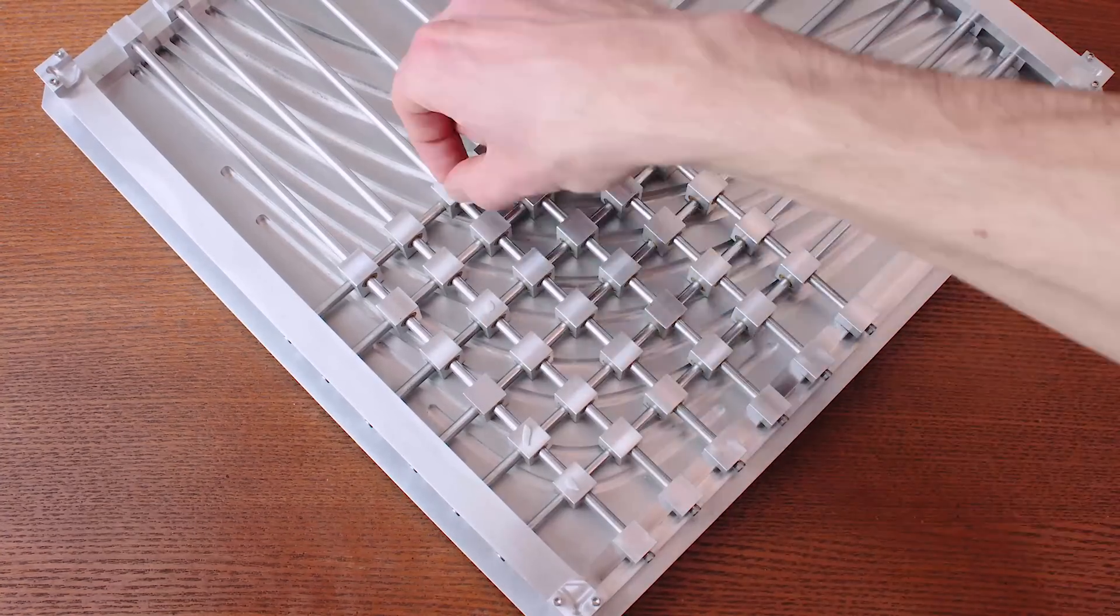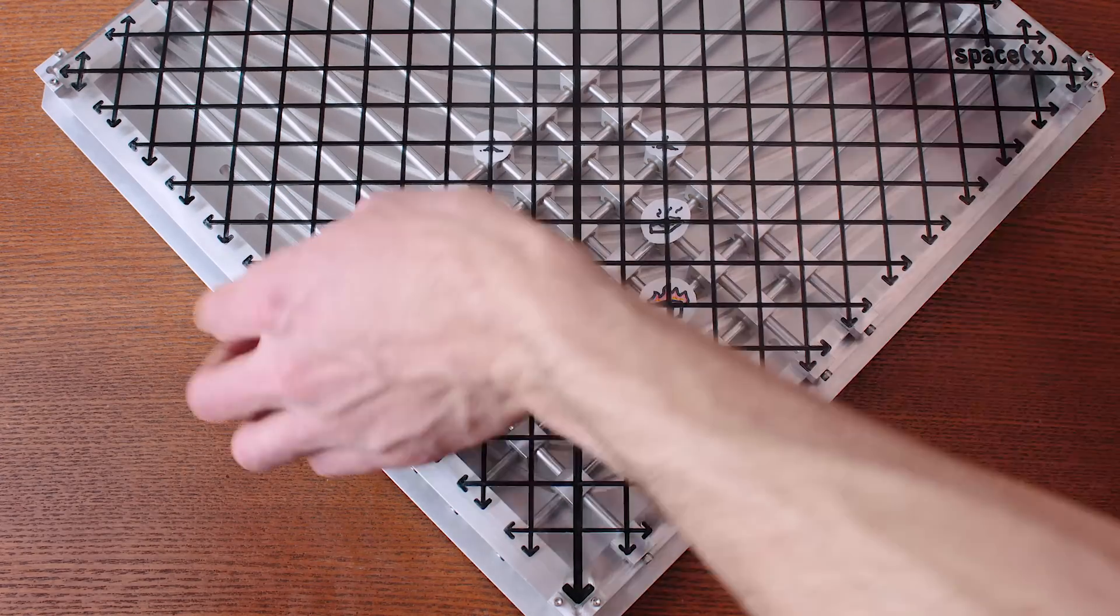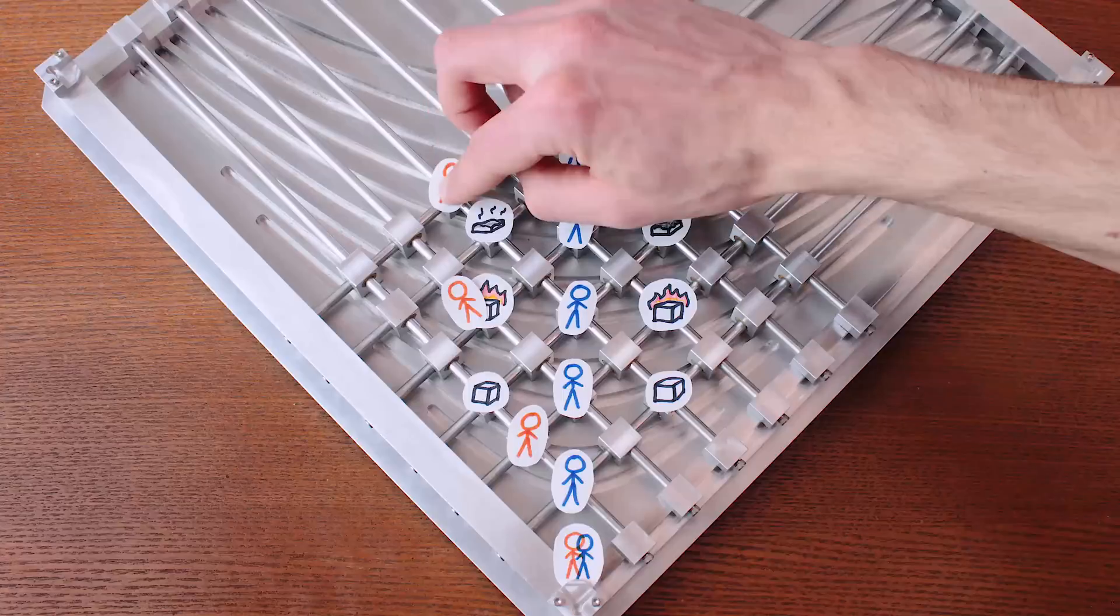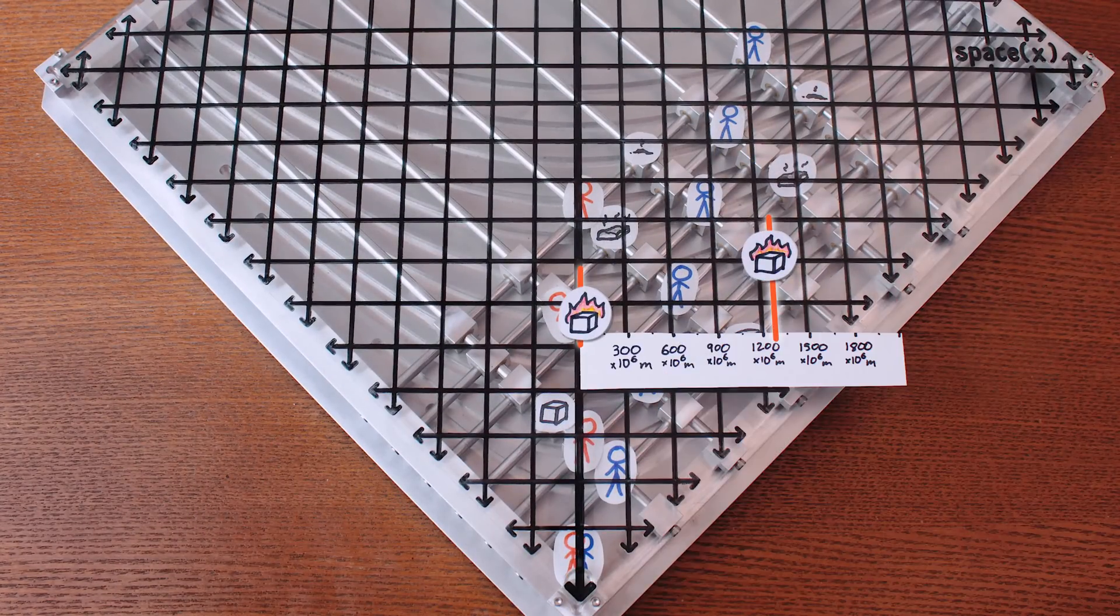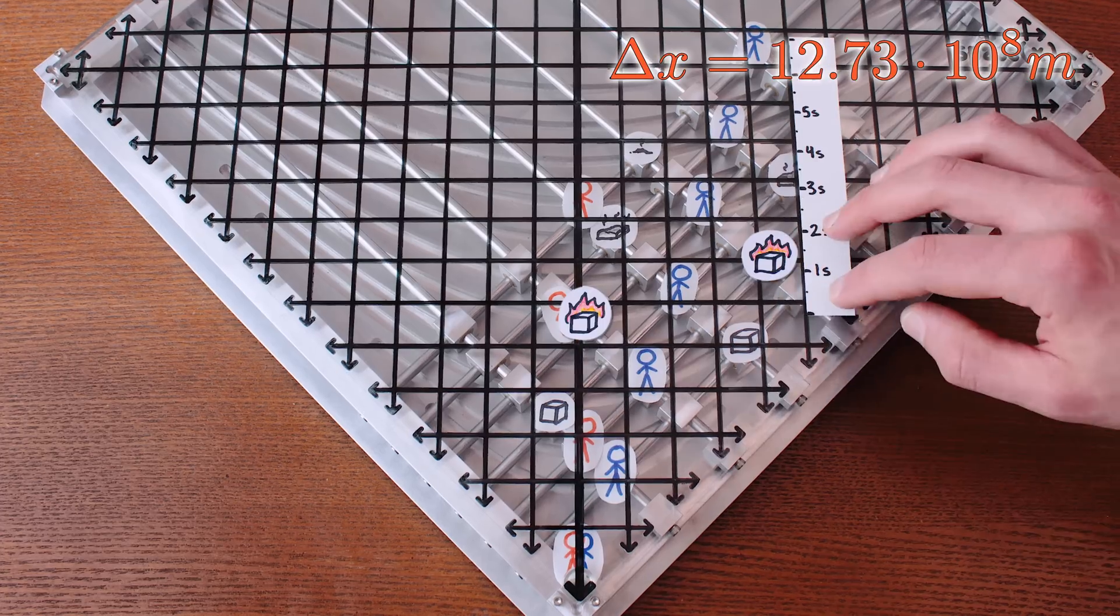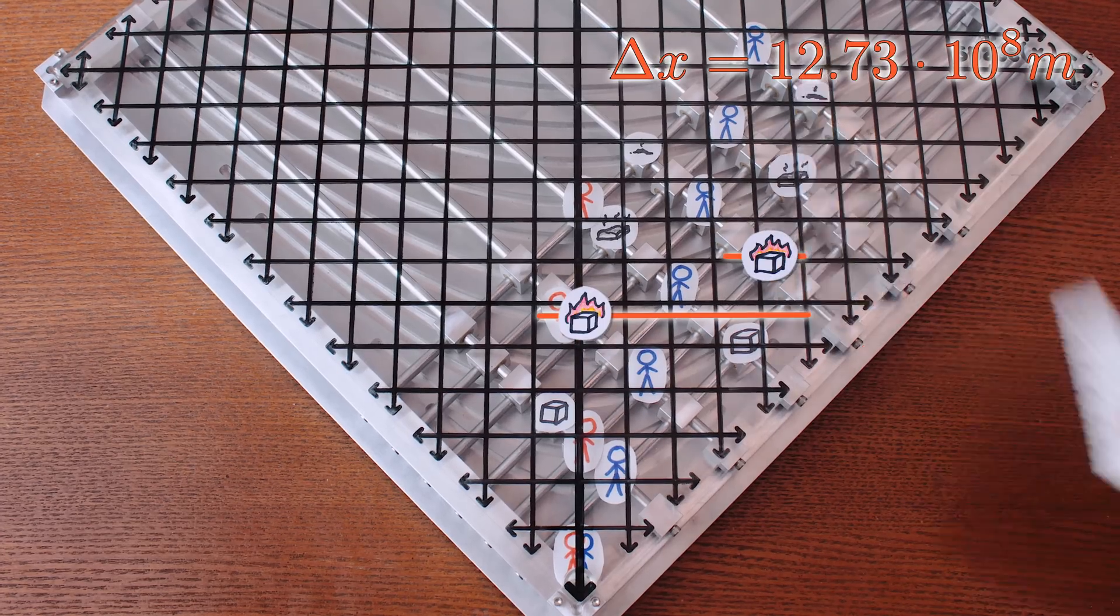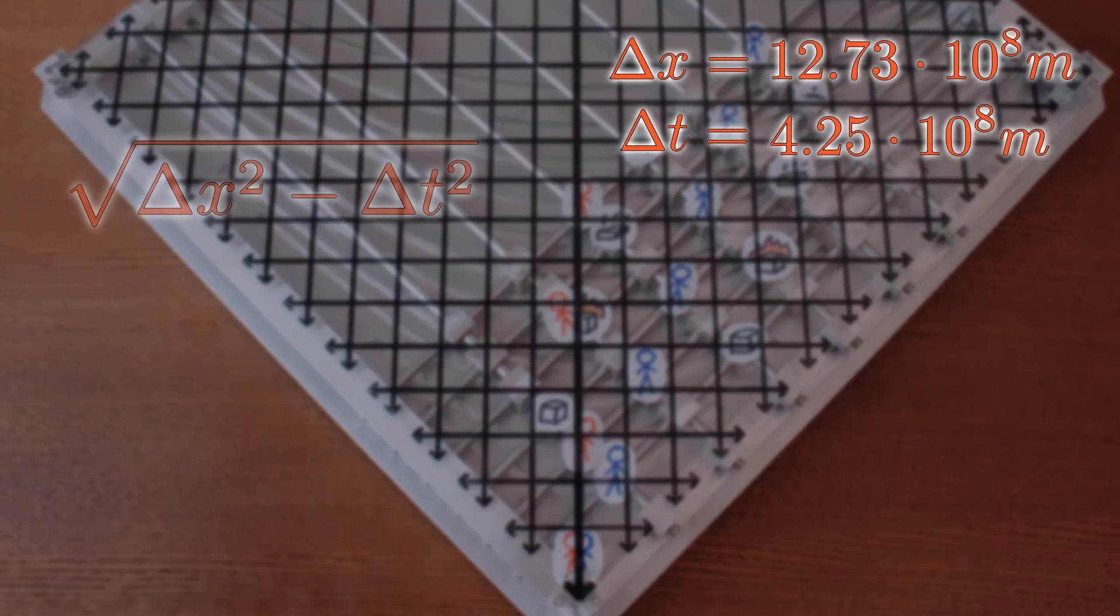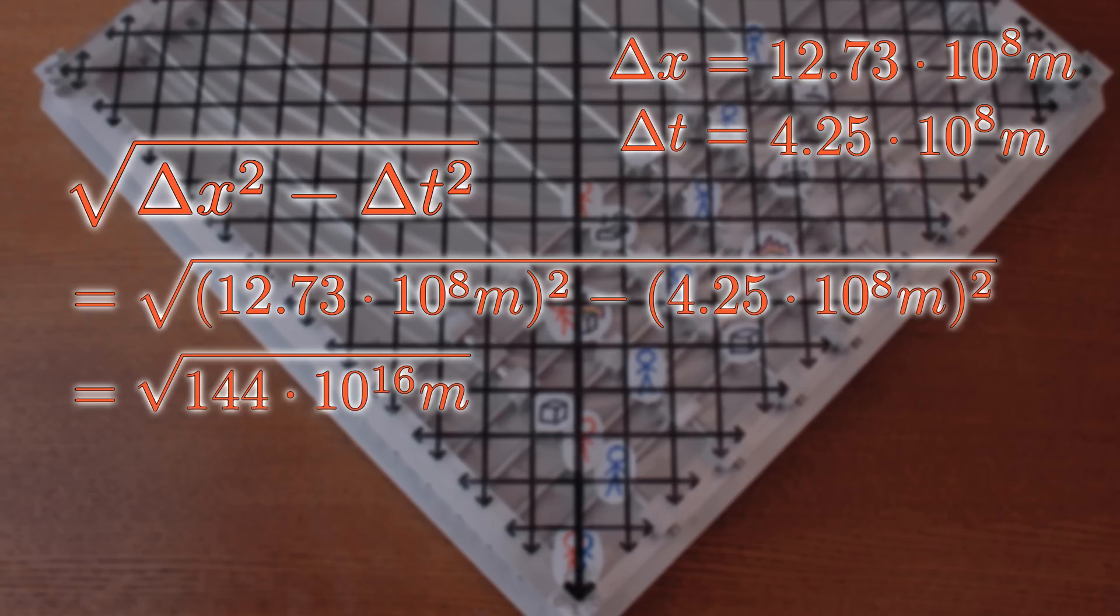This all works similarly for lengths, too. Here are two boxes that spontaneously combust 1200 million meters apart. At least it's 1200 million meters from my perspective, in which the boxes aren't moving. From your perspective, in which the boxes and I are moving a third the speed of light to the right, the distance between the combusting boxes is now 1273 million meters, and the time between when they spontaneously combust is no longer zero, it's 1.41 seconds, which converts using the speed of light to 425 million meters. And now we're ready again for the spacetime pythagorean theorem. Square the distance, subtract the square of the time, measured in meters, and take the square root of the whole thing to get, you guessed it, 1200 million meters.